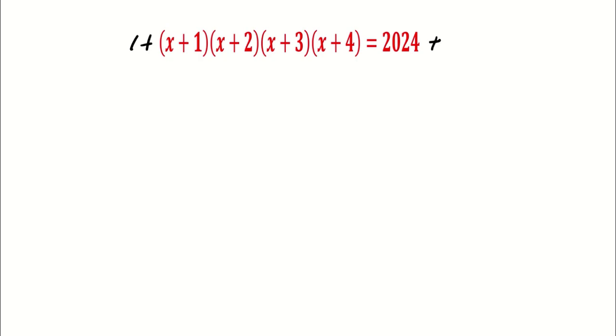The value on the right-hand side becomes 2025, which is the square of 45. Now, let's focus on the left-hand side. It is (x + 1)(x + 2)(x + 3)(x + 4) + 1.